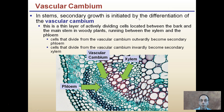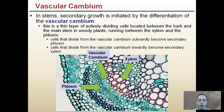In stems, secondary growth is initiated by the differentiation of the vascular cambium. This thin layer of actively dividing cells is located between the bark and the main stem in woody plants, running between the xylem and the phloem. Here's our xylem, and here's our phloem, with this thin layer being our vascular cambium. Cells that divide from the vascular cambium outwardly — towards the bark — become secondary phloem, and cells that divide inwardly, towards the center of the tree, become secondary xylem.